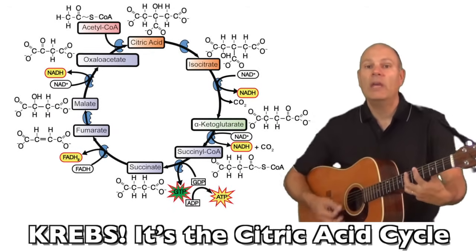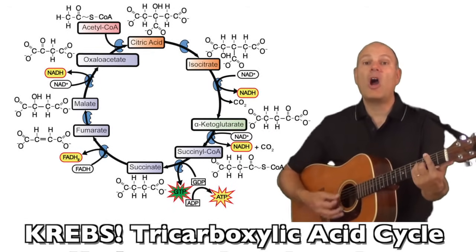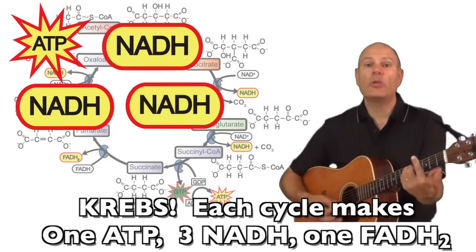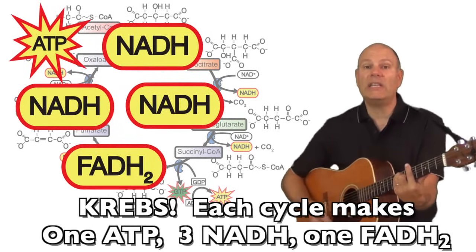Krebs, it's a citric acid cycle, Krebs. Tricarboxylic acid cycle, Krebs. Cycle makes 1 ATP, 3 NADH, 1 FADH2.